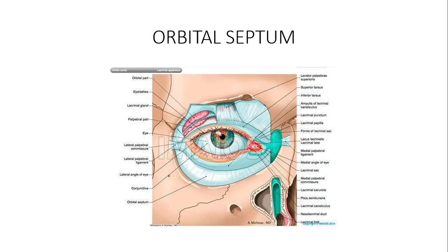Good morning students. Today our topic for discussion is orbital cellulitis. The term cellulitis refers to inflammation or infection of cells, which involves the skin and causes redness and pain. We will narrow down our discussion to the orbit.